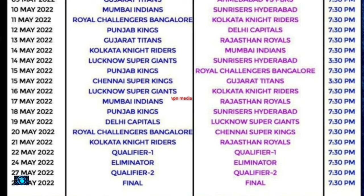May 12th: Punjab Kings vs Delhi Capitals. May 13th: Gujarat Titans vs Rajasthan Royals. May 14th: Kolkata Knight Riders vs Mumbai Indians. May 14th: Lucknow Super Giants vs Sunrisers Hyderabad. May 15th: Punjab Kings vs Royal Challengers Bengaluru. May 15th: Chennai Super Kings vs Gujarat Titans. May 16th: Lucknow Super Giants vs Kolkata Knight Riders. May 17th: Mumbai Indians vs Rajasthan Royals. May 18th: Punjab Kings vs Sunrisers Hyderabad. May 19th: Delhi Capitals vs Lucknow Super Giants.